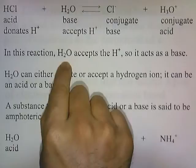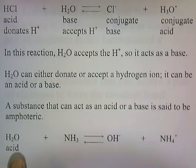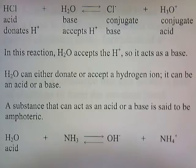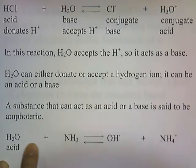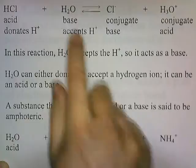In this reaction, H2O accepts the H+, so it acts as a base. What we can conclude is that H2O can either donate or accept a hydrogen ion — it can be an acid or a base. A substance that can act as either an acid or a base is said to be amphoteric. In the previous reaction, H2O donated H+ to NH3, acting as an acid, while here it accepts and acts as a base.